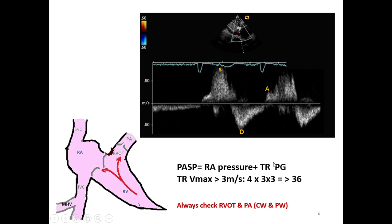However, this formula applies only when there is no RVOT obstruction or pulmonary stenosis. If either is present, the formula cannot be used to measure pulmonary artery systolic pressure from TR velocity. So the correct answer is: the patient definitely has severe TR, and 90–95% of the time also has pulmonary hypertension — but only if there is no RVOT obstruction or pulmonary stenosis. Always check the RVOT and pulmonary valve in the PSAX and subcostal views before labeling pulmonary hypertension.